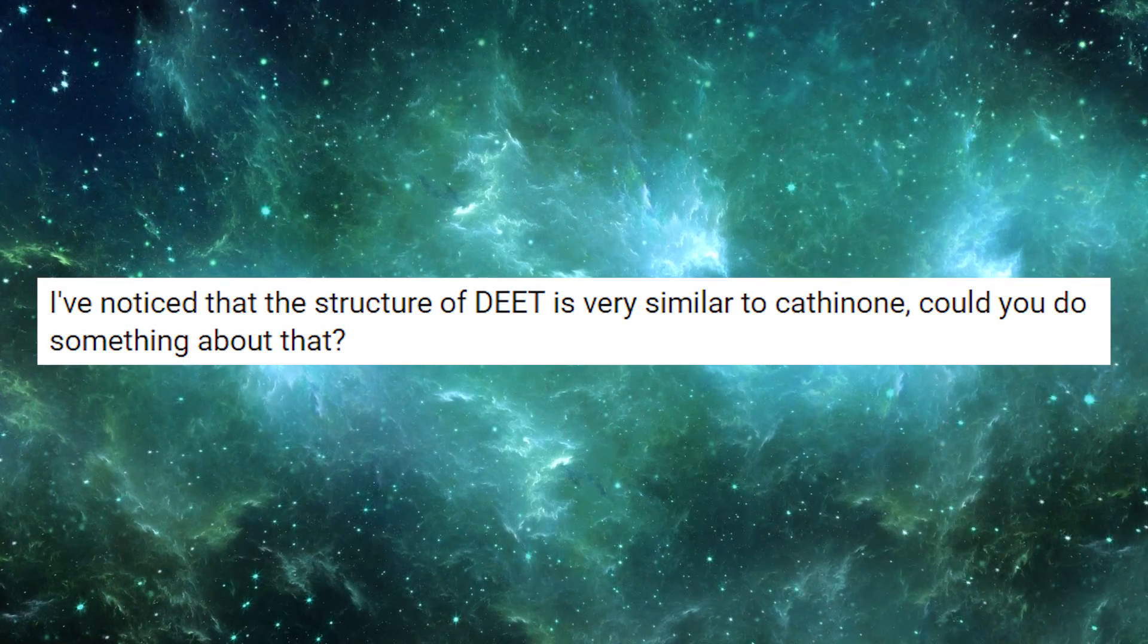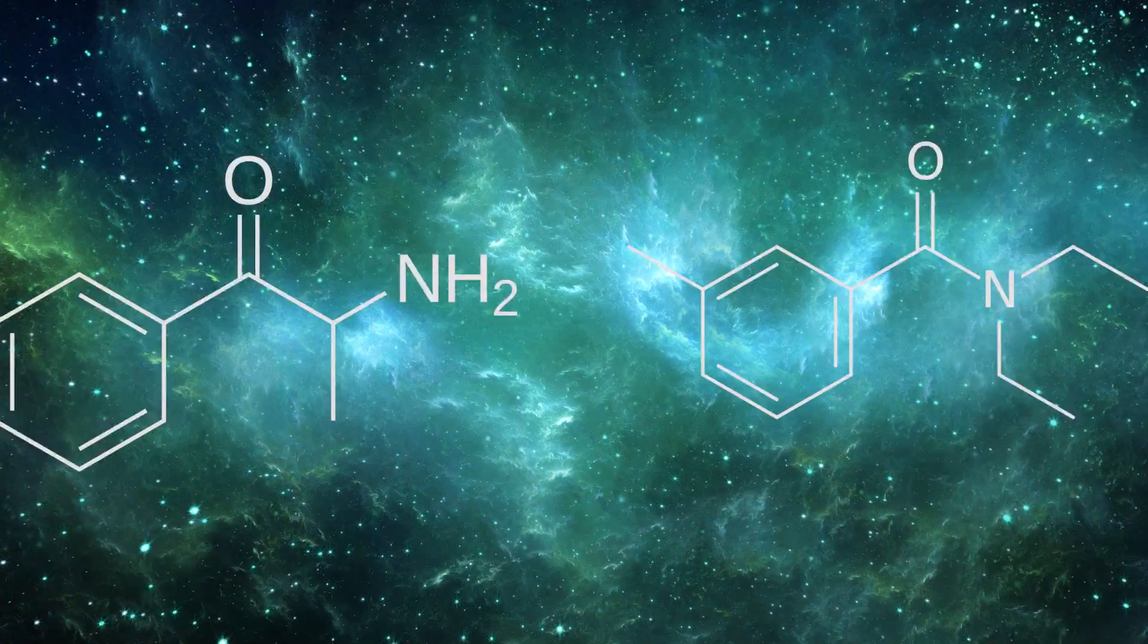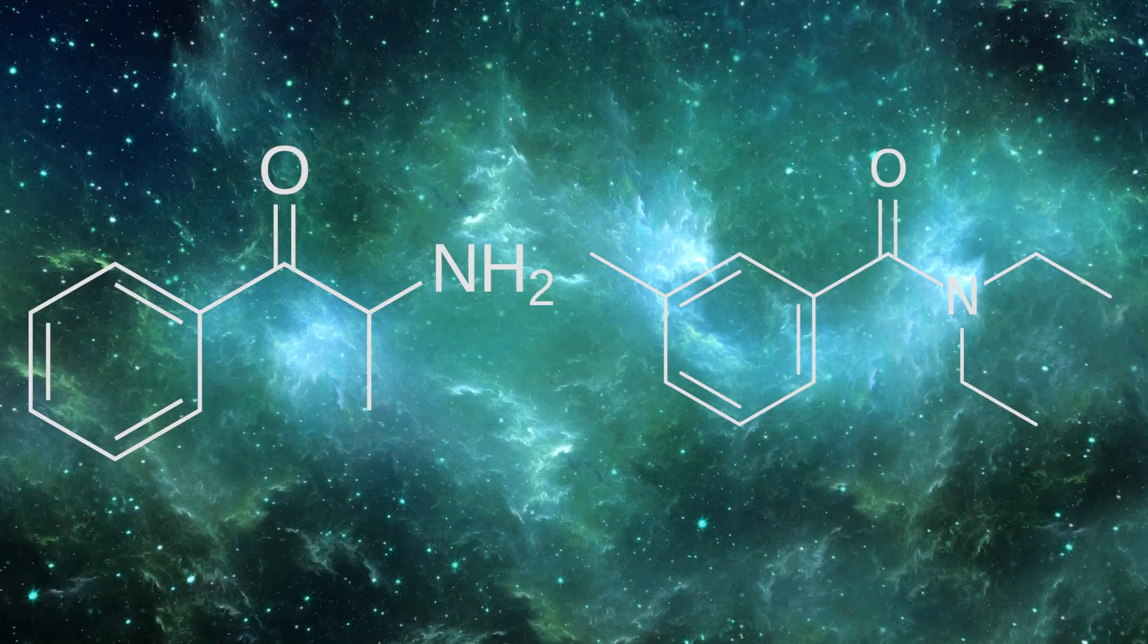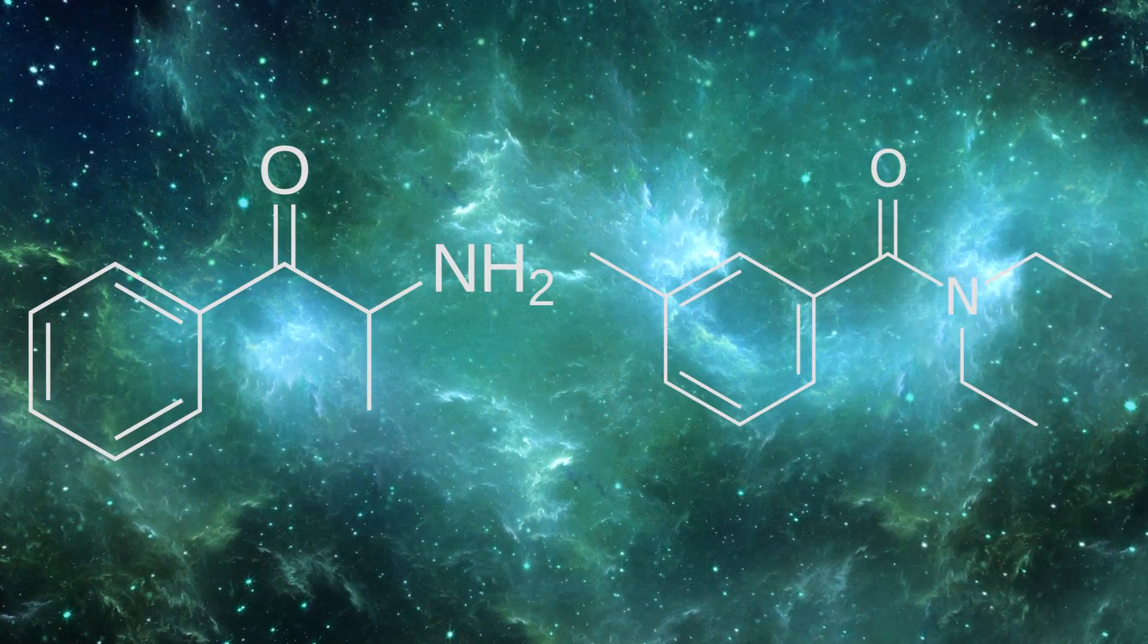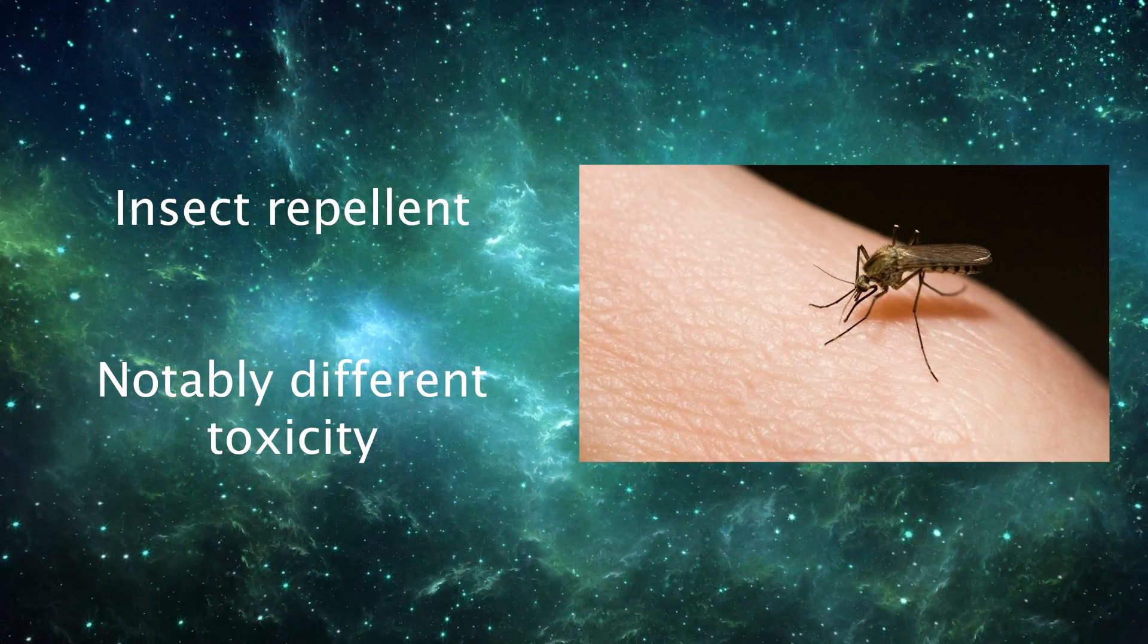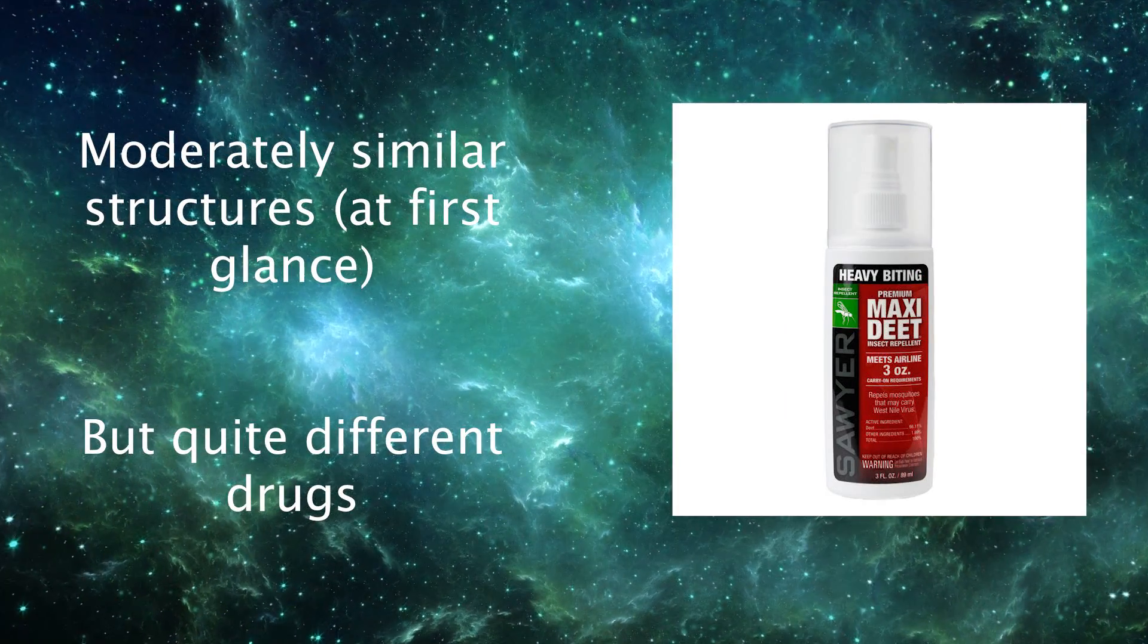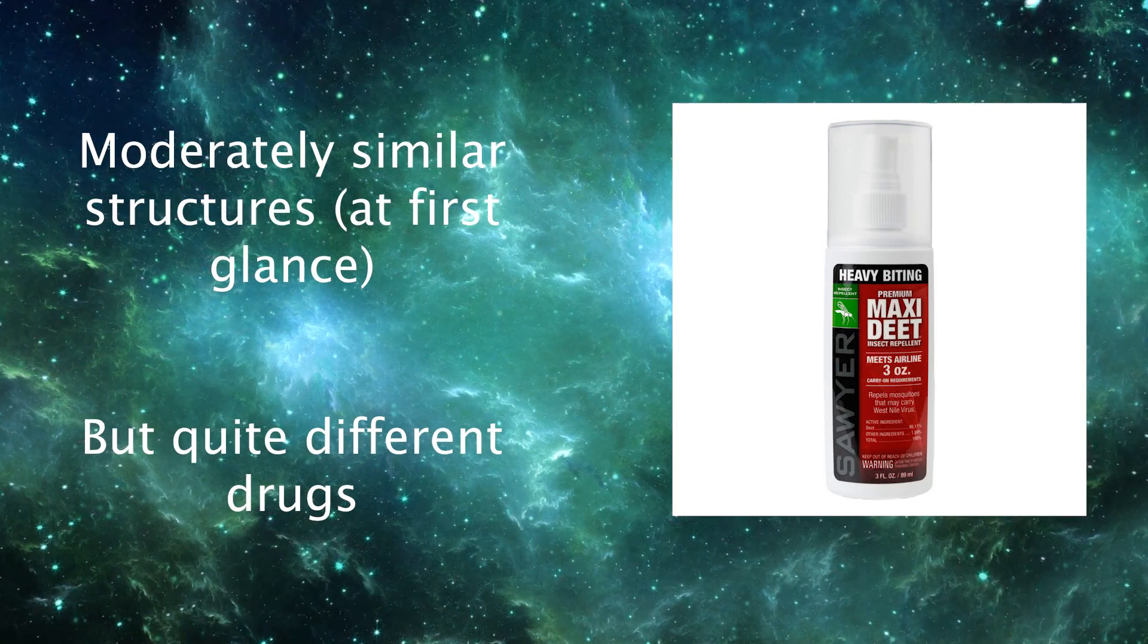I've noticed the structure of DEET is very similar to cathinone. Could you do something about that? I can see the structural similarity you're referring to. However, they have some very significant differences. DEET is an ephenethylamine, much less an amphetamine, and obviously the effects are quite distinct. DEET functions as an insect repellent, something cathinone isn't used for, and its toxicity is substantially different from cathinone. This is an example of structures appearing similar on the surface, but being functionally different to a significant degree.